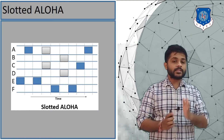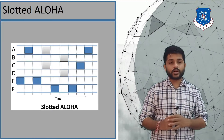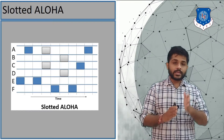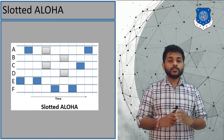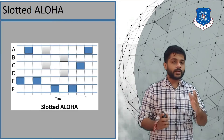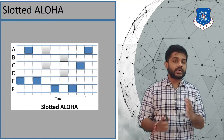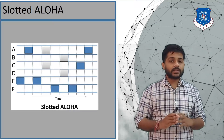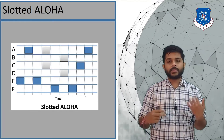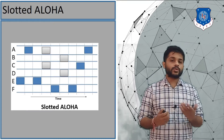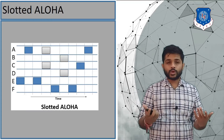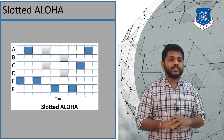Looking at the slotted Aloha figure with the same six devices, the only difference is that they can only send data at the start of a slot. You can see that packets sent by A and C are part of a collision; because of the collision they will wait for some backoff time and send the packet again. That is slotted Aloha. I hope you now know the difference between pure Aloha and slotted Aloha — thank you so much.